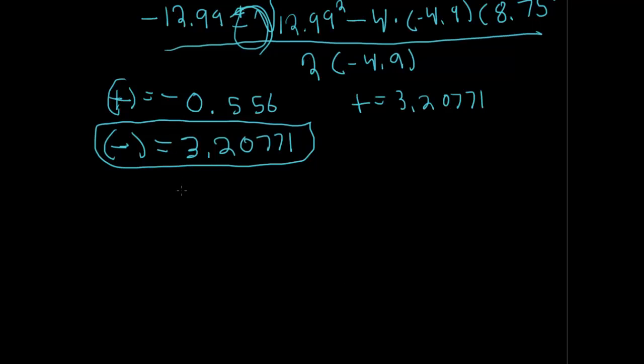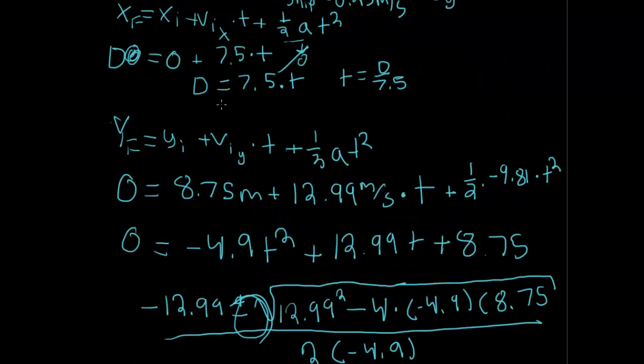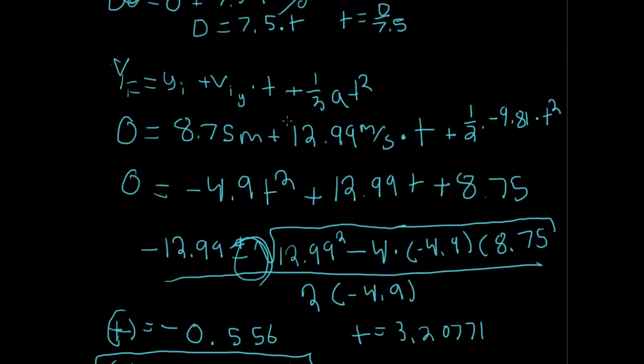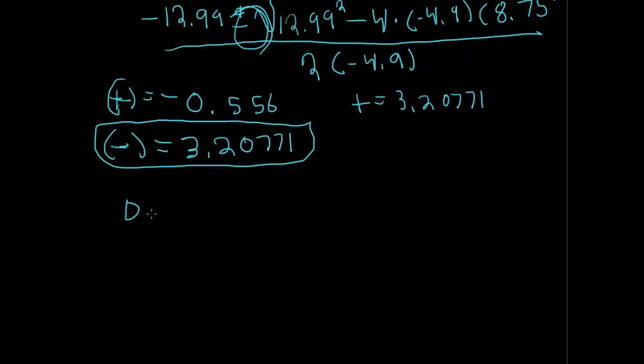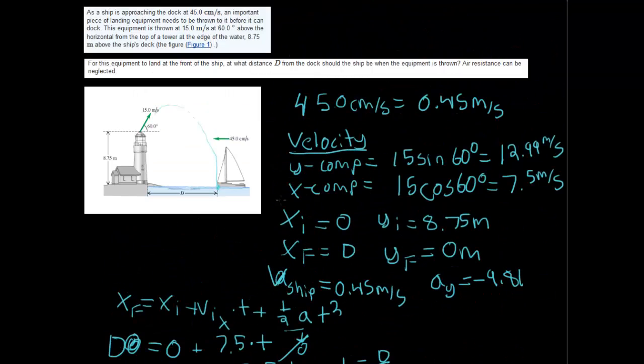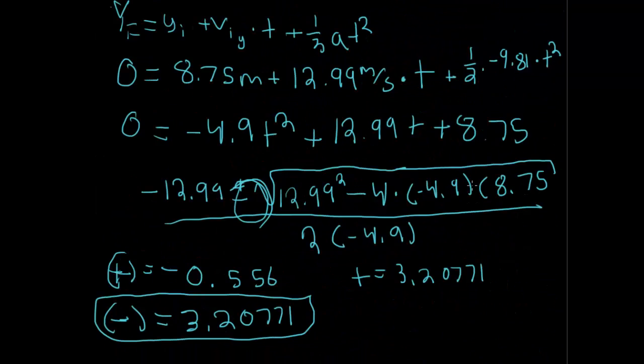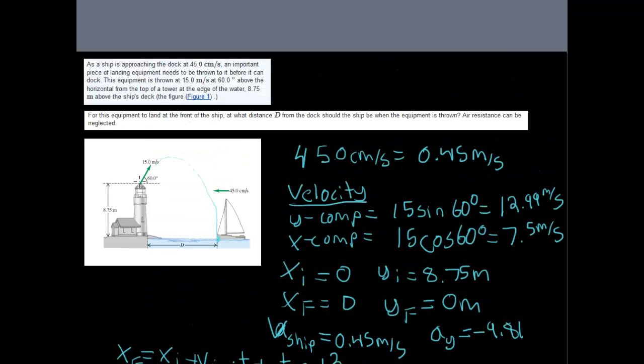So now we'll use our time to input it into our first equation that we derived here, which was D equals 7.5 times T. So D, the distance, equals 7.5 times 3.20771, which is equal to 24.0578, and that's in meters. So now we have, what I did here was I used the x component of the velocity, 7.5 meters per second, multiplied it by time because we found the projectile as it moved from the x position with a constant velocity over a period of time to the D position here.